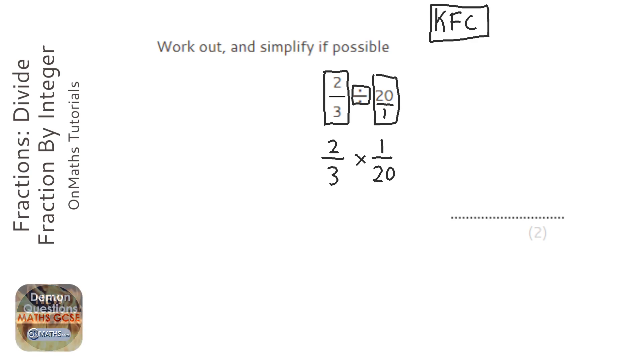So if you have a whole number on its own, so it's not a fraction, you just put a 1 underneath it, and then when you flip it, put a 1 over it.